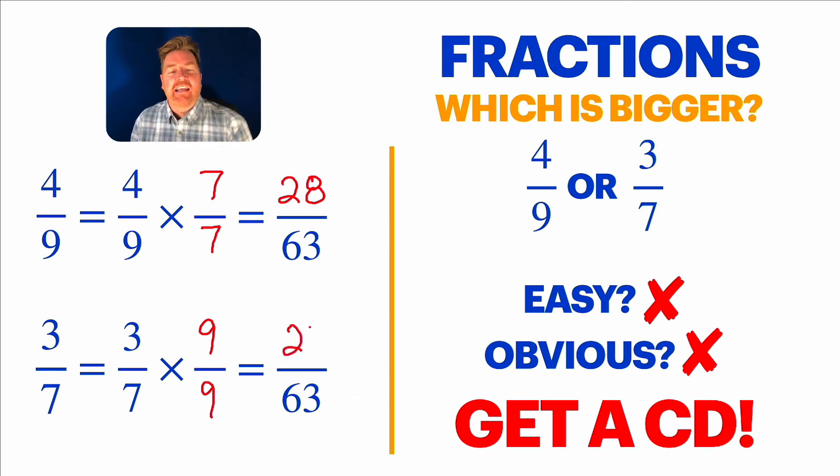Ah, look at that again. So, super duper close to one another. Just one sixty-third separates those two fractions. Those are so tight. But now that they have a CD, we can see very clearly who's bigger. It's the 28 sixty-thirds. Or, in other words, four ninths. And it's four ninths, guys. There it is.